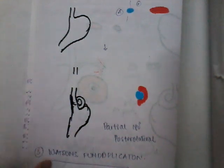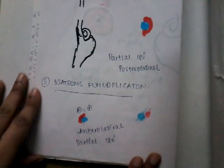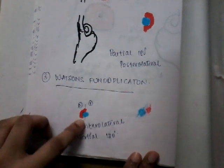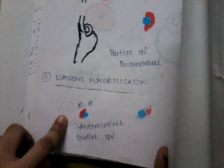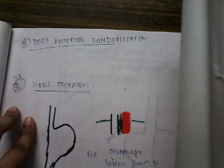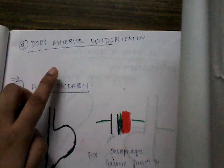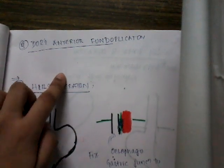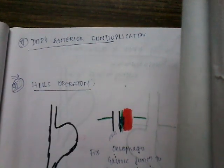There is another fundoplication called Watson's fundoplication, in which there is only anterolateral wrapping, and that too to only 120 degrees anterolateral wrapping around the esophagus. Next is the Dor anterior fundoplication, where the fundus of the stomach is wrapped around the esophagus only anteriorly. That is Dor anterior fundoplication.